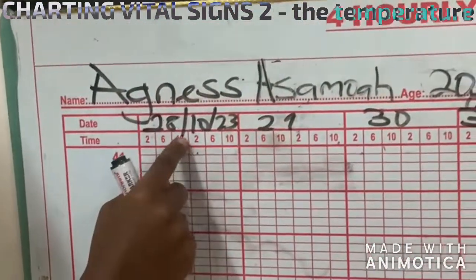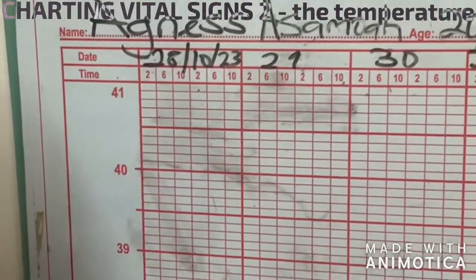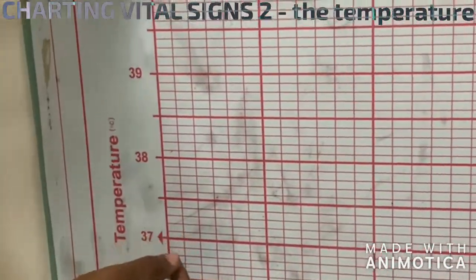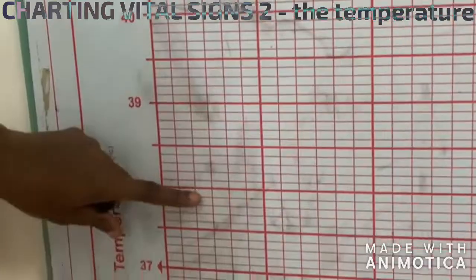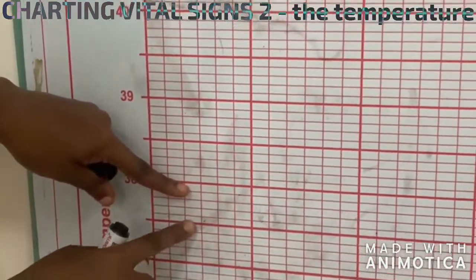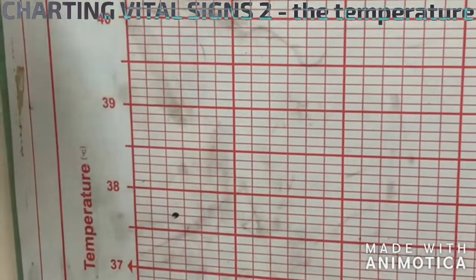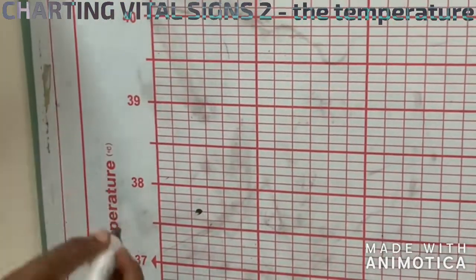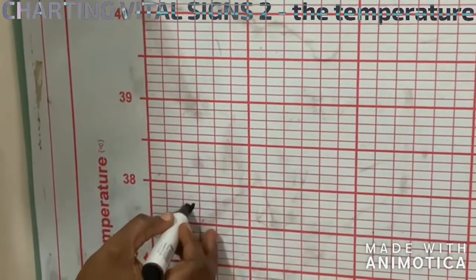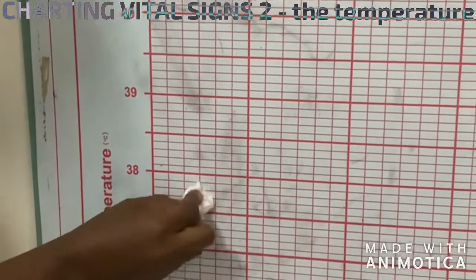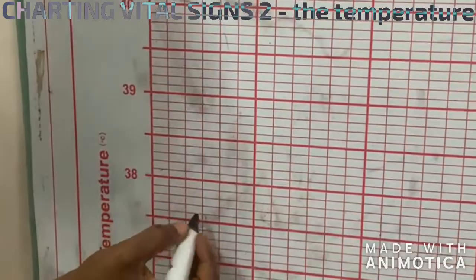On 28, Agnes's temperature at 10 a.m. was, let's say, 37.7. So we come to 10 a.m., trace it down, we look for 37. This is 0.5, 0.6, 0.7, then you plot it here. It's as simple as that. You can also cross it like this. It's also accepted, but I prefer plotting the dots.